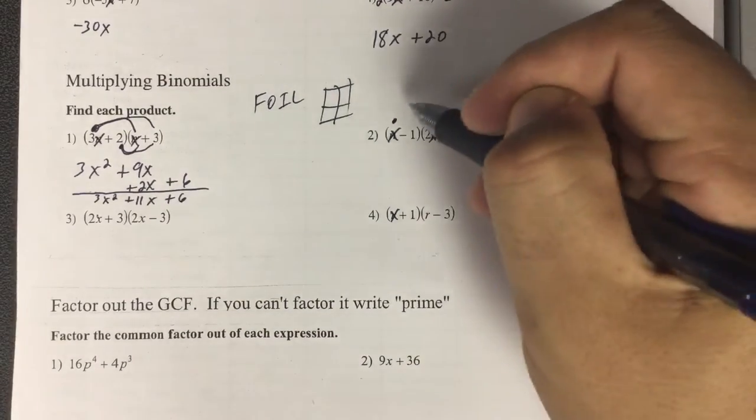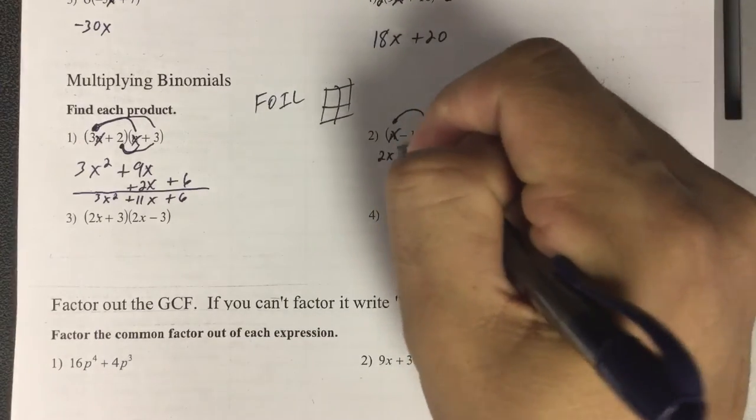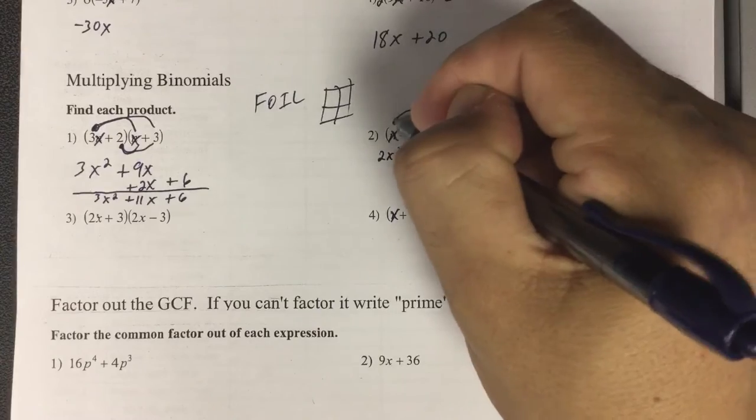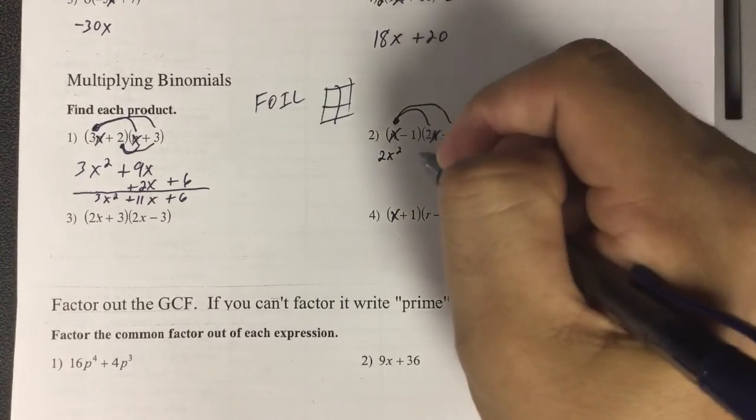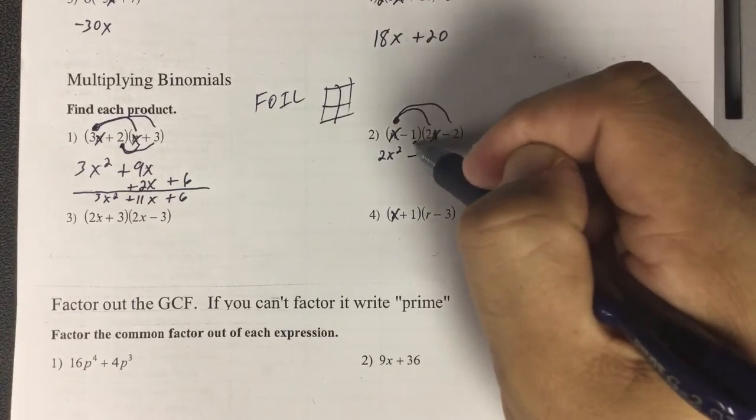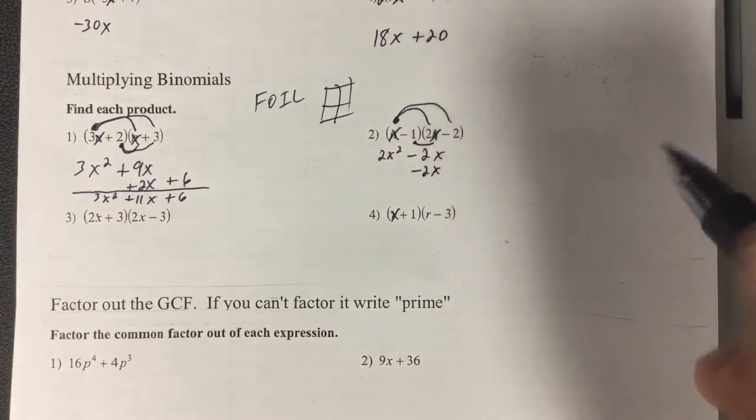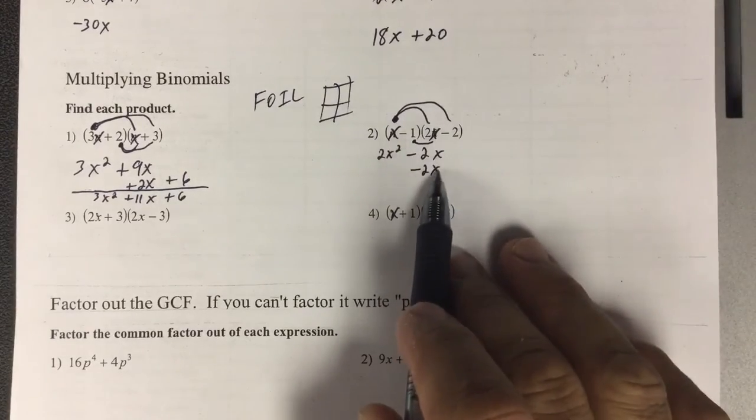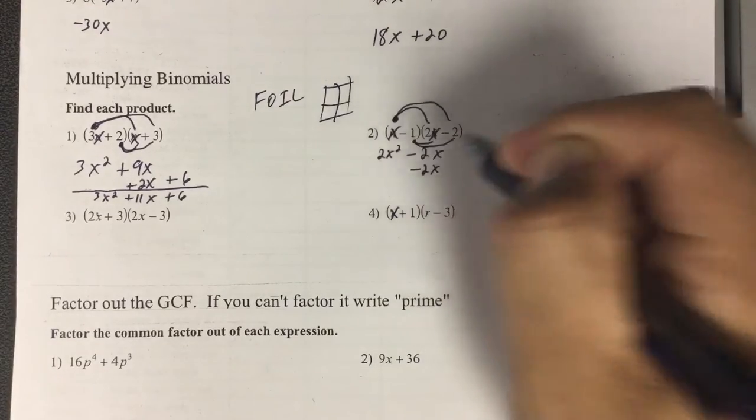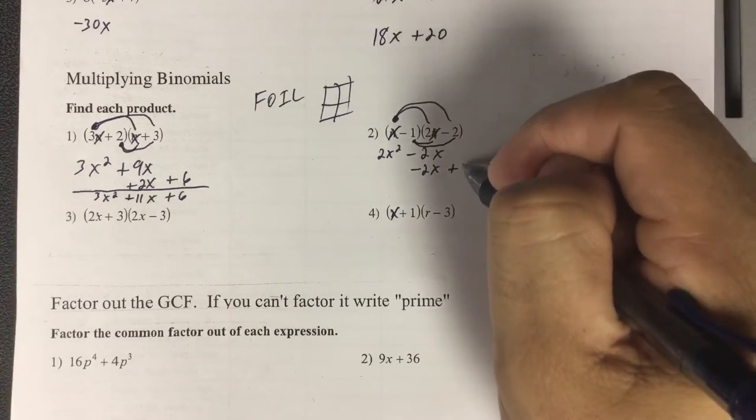But on this one, I have an x here. x times 2x is 2x squared. x times a negative 2 is negative 2x. Now I go on the inside. Negative 1 times 2x is negative 2x. And I put it below that one because they have the same x. Negative 1 times negative 2, negative times negative is positive and is positive 2.